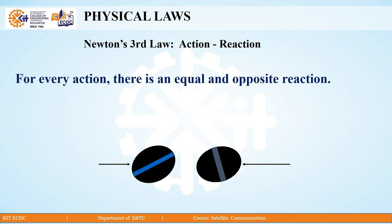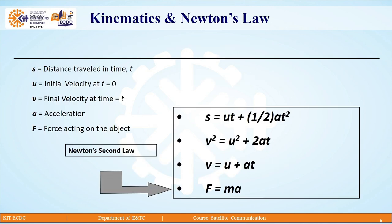Newton's third law is of equal action and reaction. These are some equations related to Newton's laws. The first equation is s = ut + ½at², where s is distance travelled in time t, u is the initial velocity at time t = 0, and a is the acceleration at time t. The second equation is v² = u² + 2as. v is the final velocity at time t, v = u + at, and F = mass × acceleration, as stated by Newton's second law.